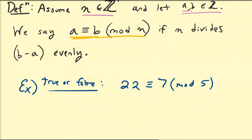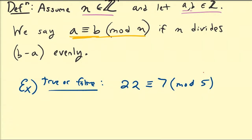Is 22 congruent to 7 modulo 5? So the first thing we do is calculate b minus a. So this is n, this is a, and this is b. So b minus a in this case is going to be 7 minus 22, which we know to be equal to negative 15. That's step 1.